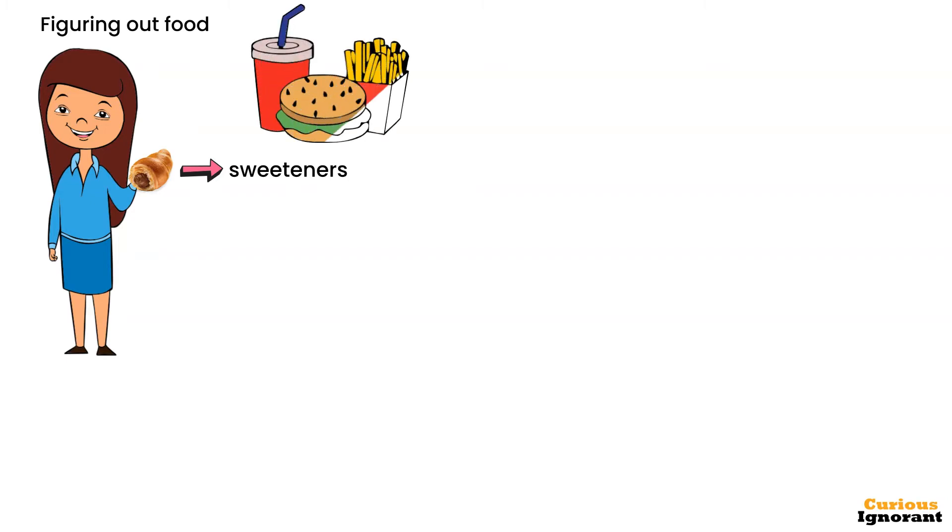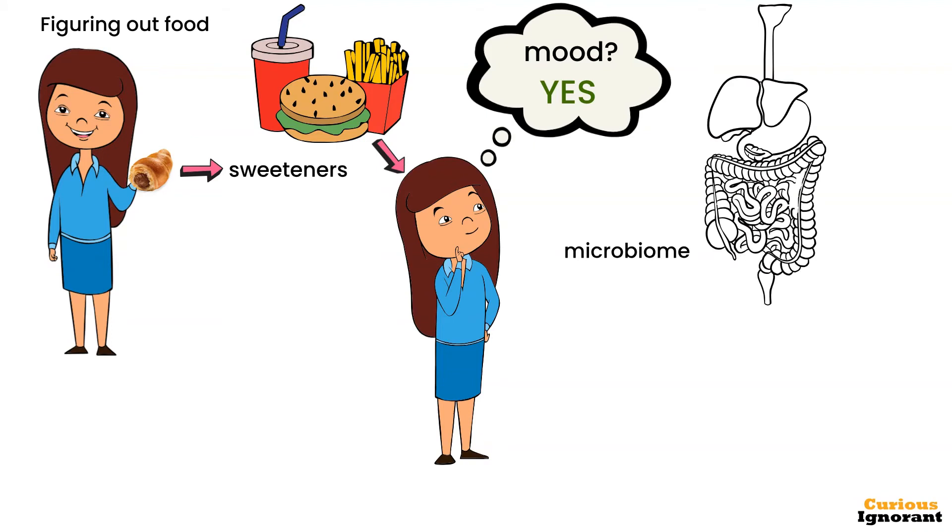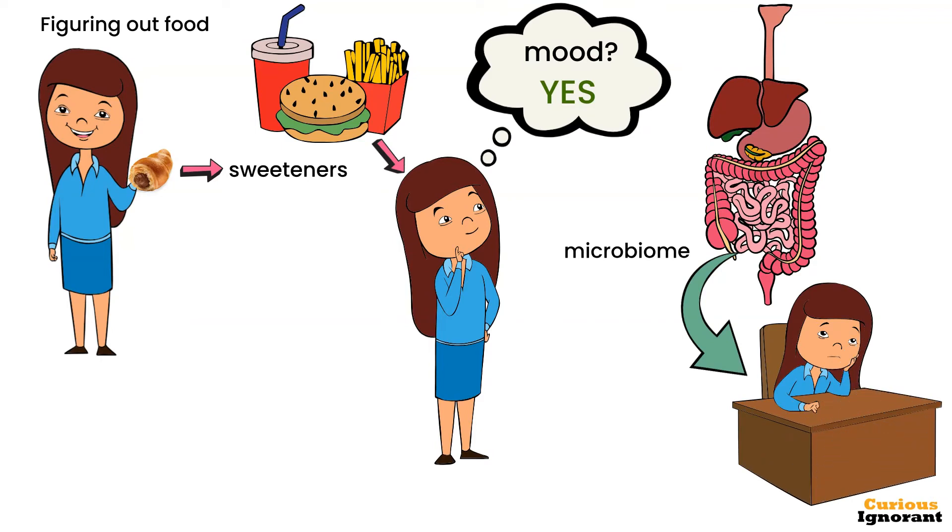Ultra-processed junk food is a form of biological warfare that affects our health, decision-making ability, and mood. Mood? Yes. It is already verified in several researches. Microbiome in our gut highly influences our mood. Food choices, in turn, impact the normal functioning of the gut.